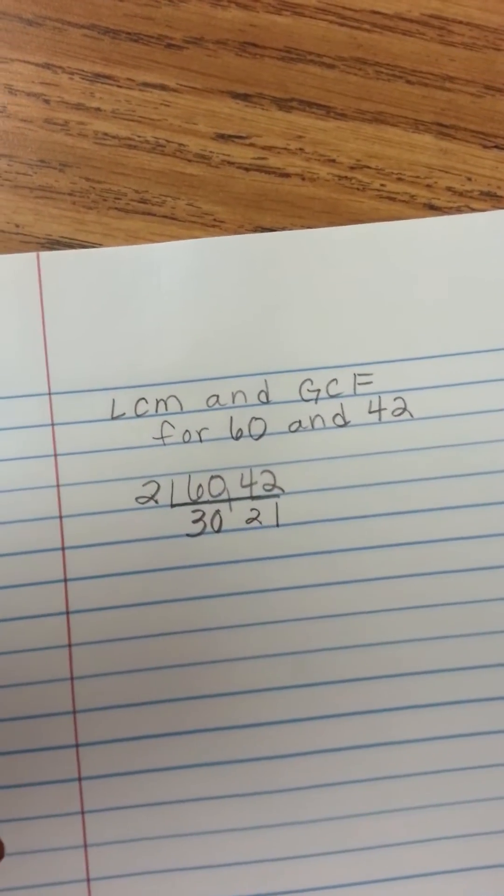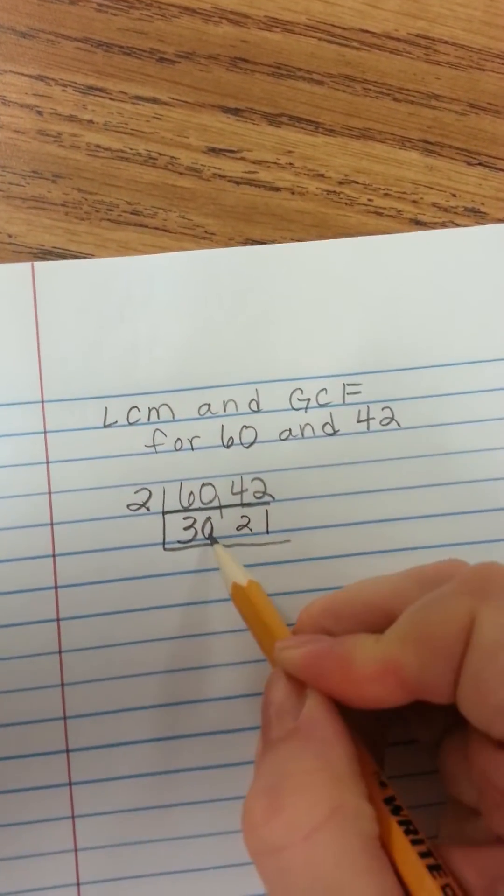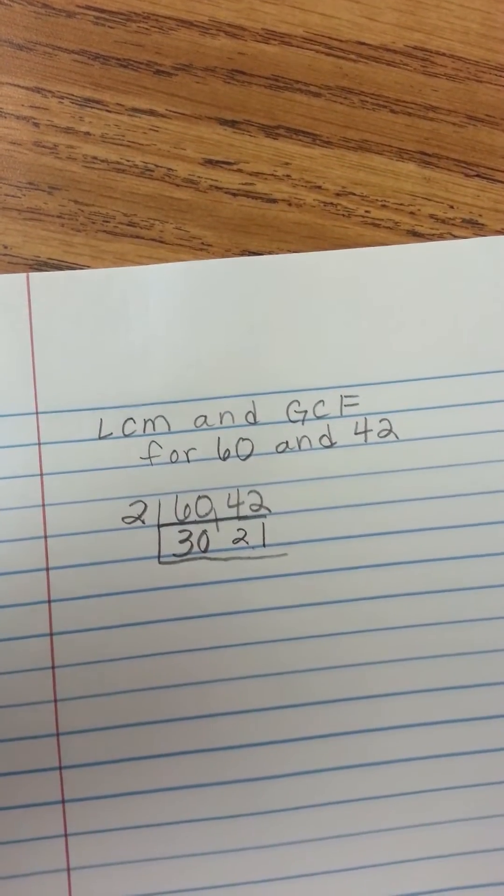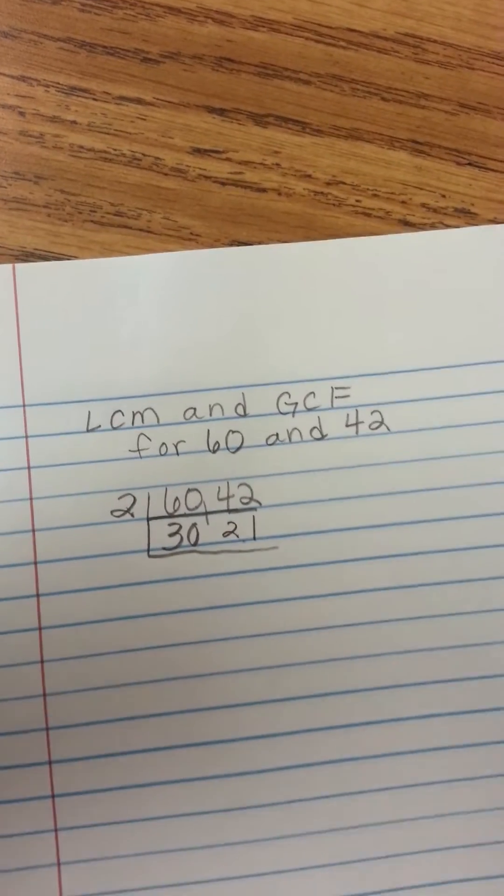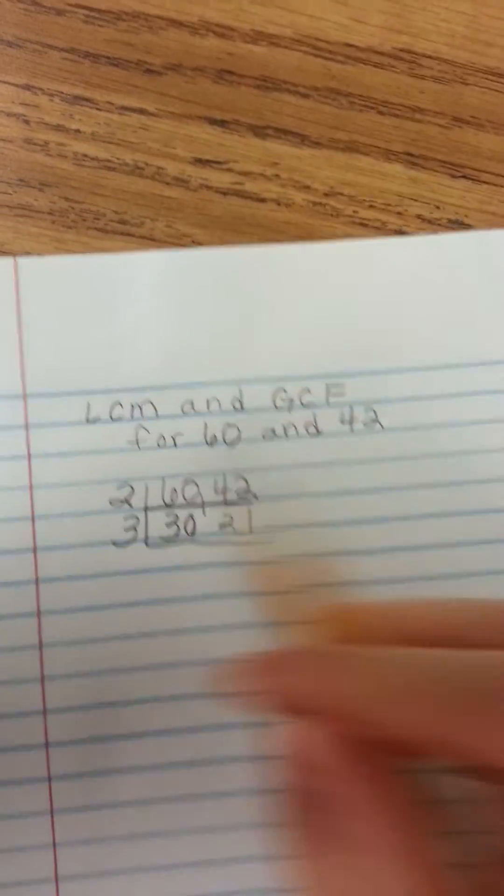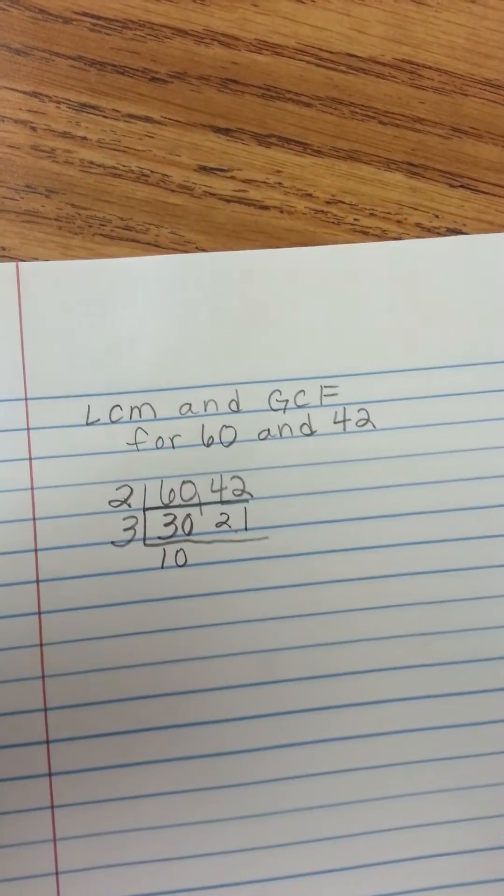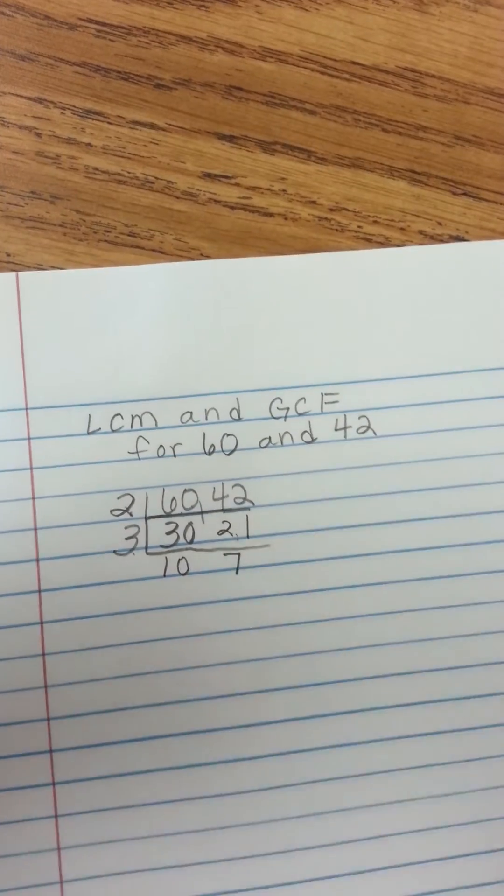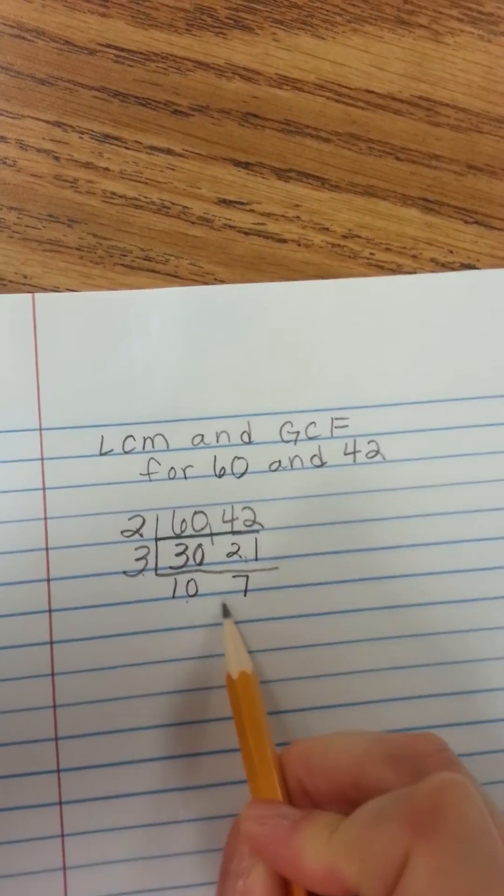Now I'm going to look at 2 and I'm going to think again. Let's see. 30 and 21, well, I can think of a number that goes into 30 and that goes into 21. How about 3? 3 goes into 30 10 times. 3 goes into 21 7 times.